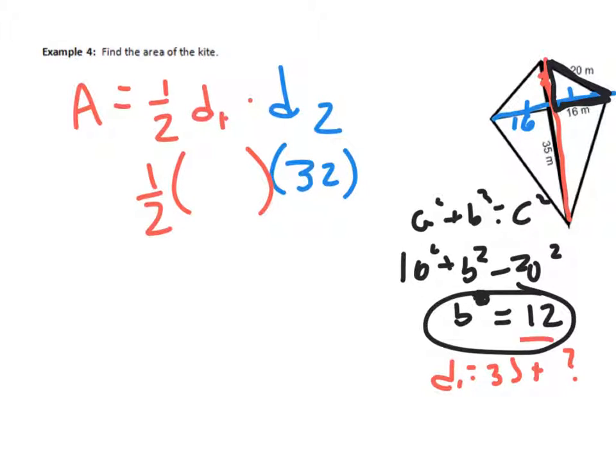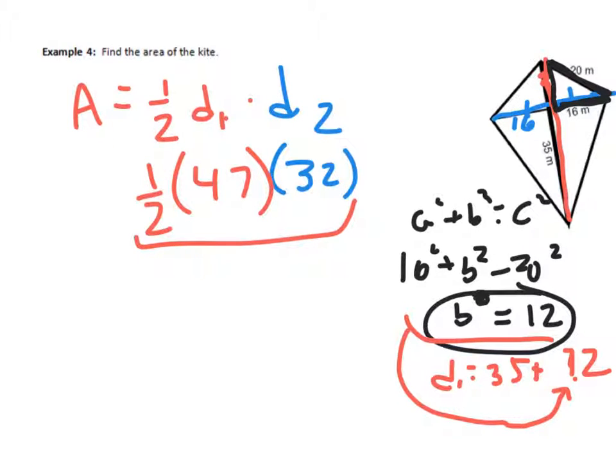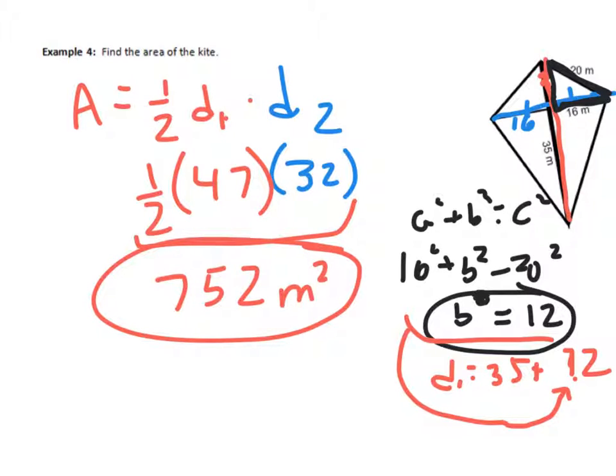So that 12 gets substituted here into 35 plus the 12, because that would be the whole diagonal. So that ends up to be 47. And then you just type this all in into your calculator, and you get 752. And of course, you need to remember your units. This is area, so it's not just meters. It's square meters. All right, it's going to be a tricky lesson. There's two lessons that I gave you in one here, so make sure you get all this down. Thanks for listening.